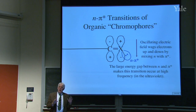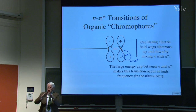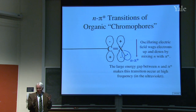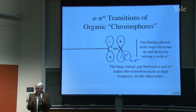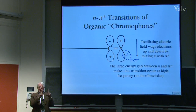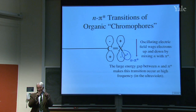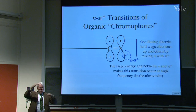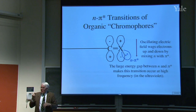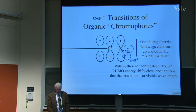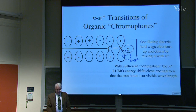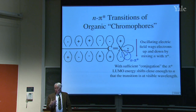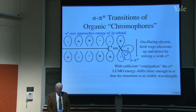How could you make those two orbitals closer in energy? The unshared pair energy is hard to change much, except by changing the atom — oxygen, nitrogen, sulfur. To lower the energy of the LUMO in the π system, you can add more conjugated double bonds. Remember, the LUMO comes down and the HOMO comes up as you extend conjugation, bringing the π* closer to the energy of the unshared pair. With more and more double bonds, the LUMO approaches the energy of an isolated p orbital, so the light required gets redder and redder.